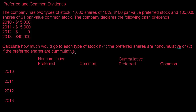If the shares are cumulative, that means if the preferred shareholders don't get everything they're entitled to, the next time a dividend is paid they're going to get what they're entitled to. Now this does not generate a liability for the company — this is just something they track on paper, so you're never going to see preferred dividends payable for the amount that was not paid to the preferred shareholders.